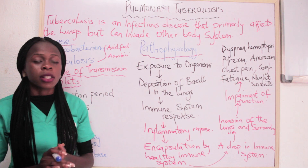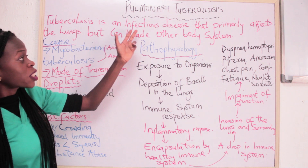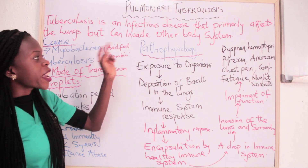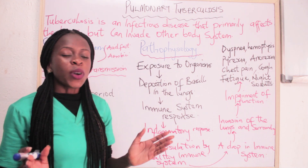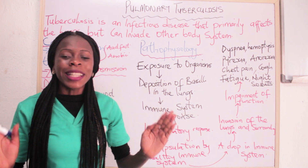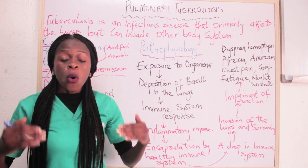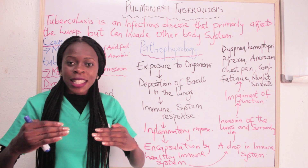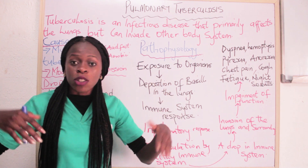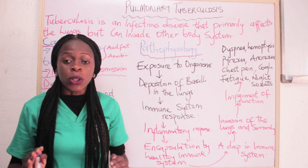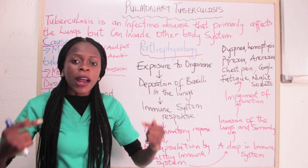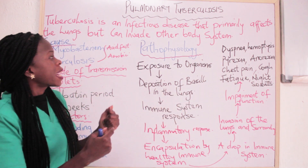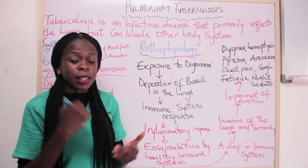Pulmonary tuberculosis is an infectious disease that primarily affects the lungs but can invade other body systems. Most times whenever we hear pulmonary tuberculosis, we feel it's only the lungs that is being affected. But when the lungs are affected and the lymphatic system comes in, it will help to spread the infection to your liver, to your kidney, and to all other organs in the body.